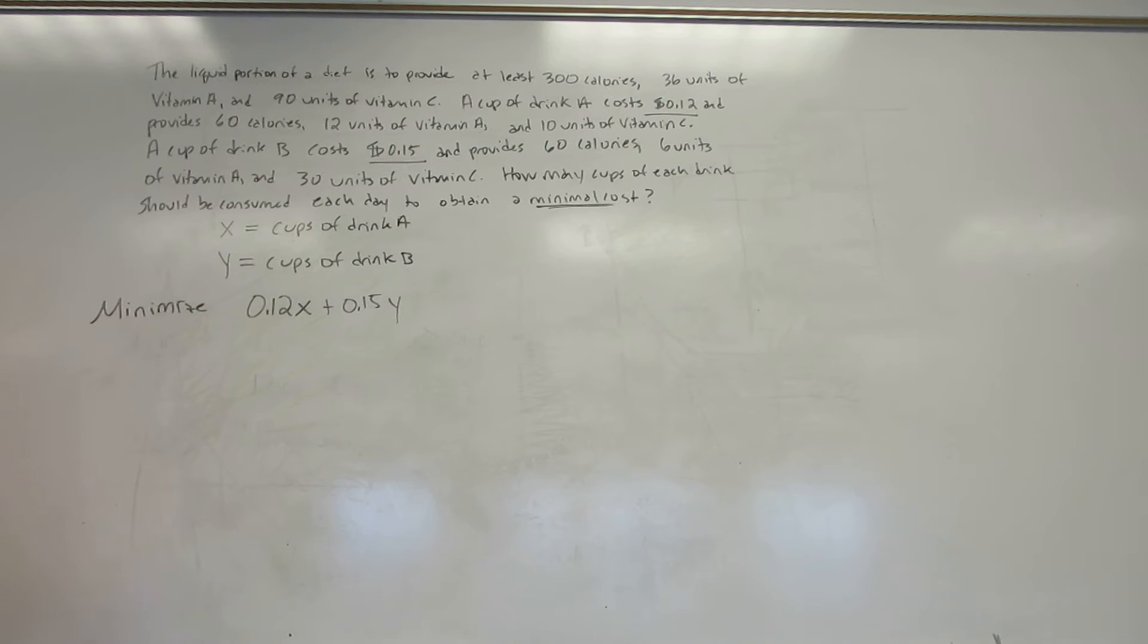Now I'm going to start doing constraints. The thing with constraints is you're always looking for something the problem cares about. It tells you here, right at the very beginning: at least 300 calories, 36 units of vitamin A, and 90 units of vitamin C. So I'm going to have a constraint for every single one of them.